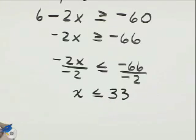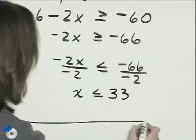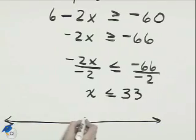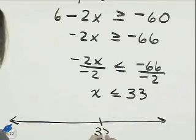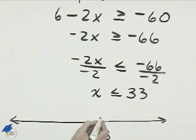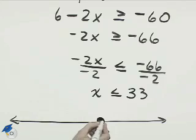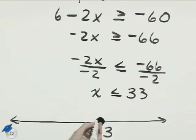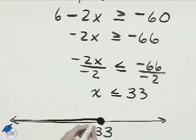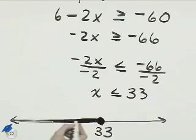Let's see what this looks like on the number line. Here's 33. We need a solid circle at 33 because x is less than or equal to 33, and we'll shade to the left to show that x is less than 33.